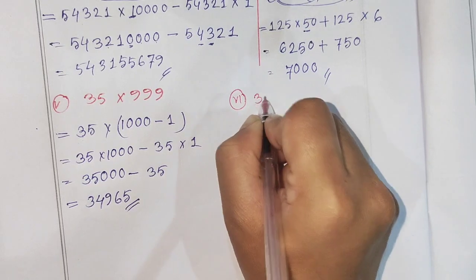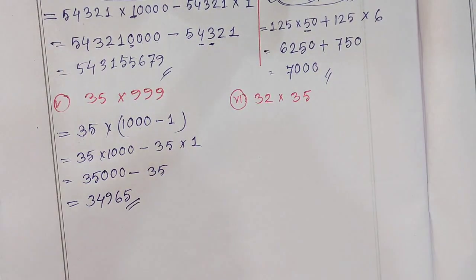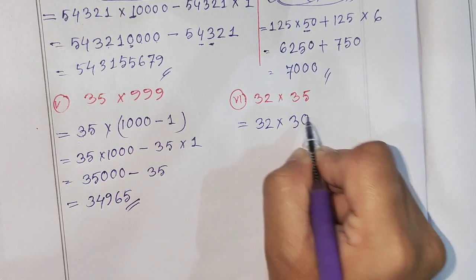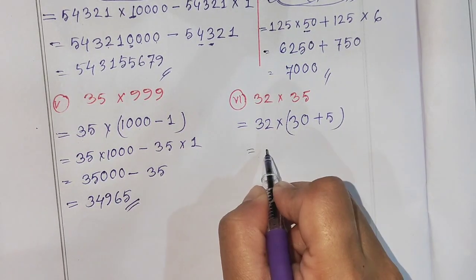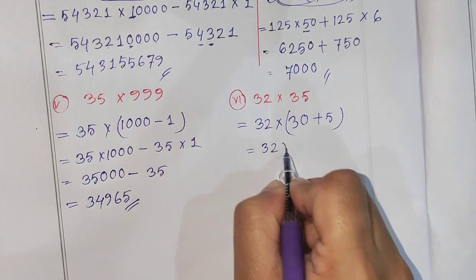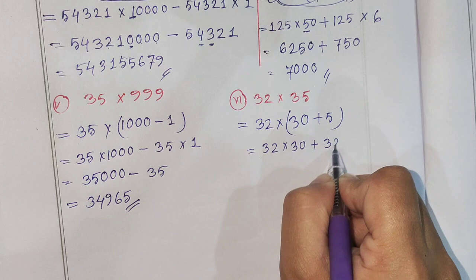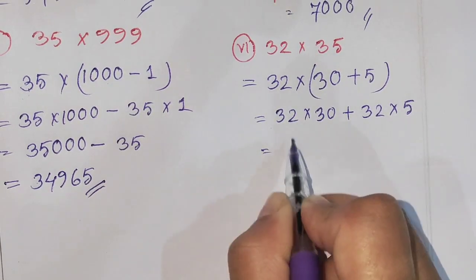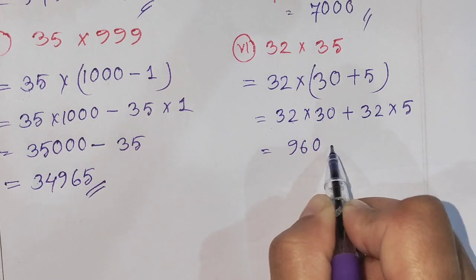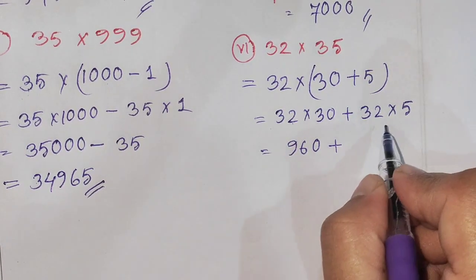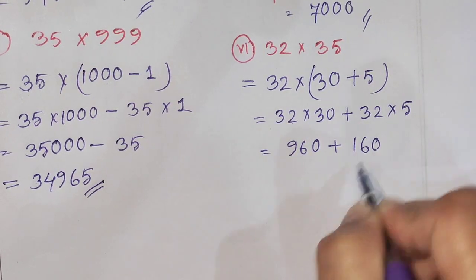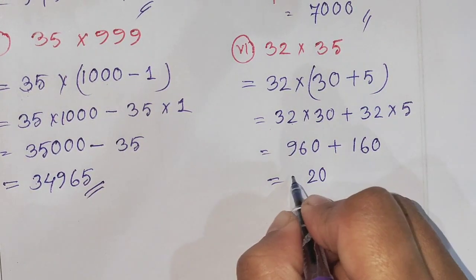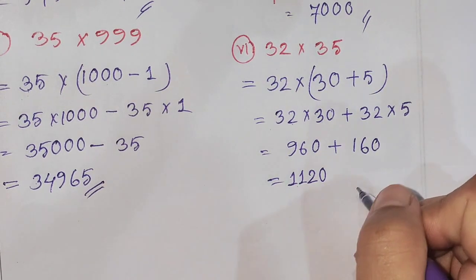Next, question number 6: this is 32 into 35. So 35 to break — 32 into 35 to break as 30 plus 5. Next, we turn: 32 into 30 plus 32 into 5. So 32 into 30 equals 960, and 32 into 5 equals 160. So 1, 1, 2, 0 — the answer has to be answered.